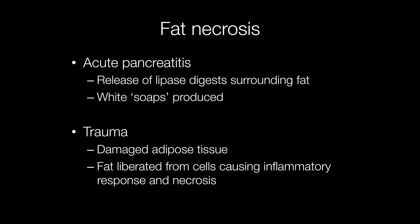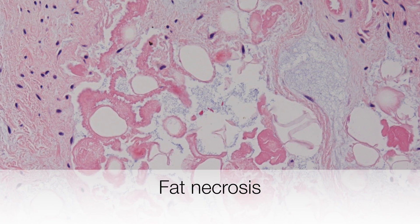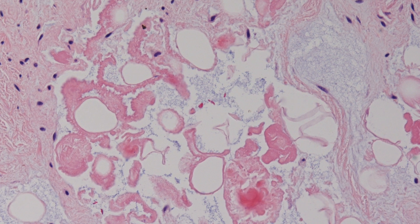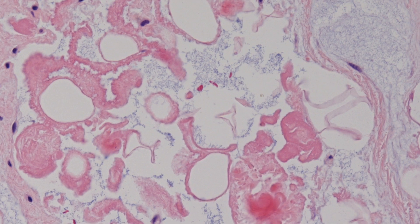Fat necrosis can occur in two main settings. One is in acute pancreatitis, where there is a release of lipase from the inflamed pancreas causing digestion of the surrounding fat, resulting in white soaps being produced. Another cause is trauma, where fat is liberated from damaged adipose tissue, causing an inflammatory response and necrosis. This is an example of fat necrosis in a Morton's neuroma as a result of trauma, and you can clearly see the ghost outlines of the fat cells.